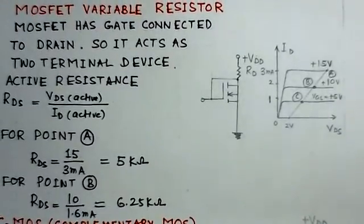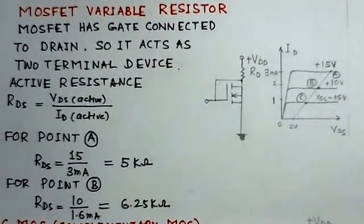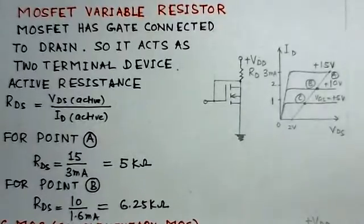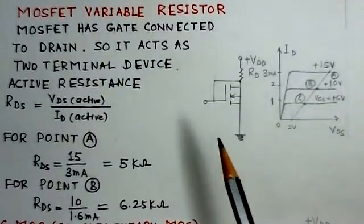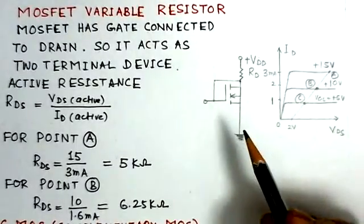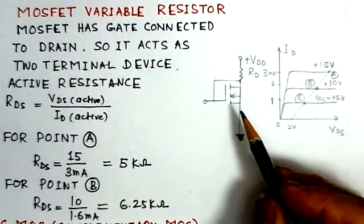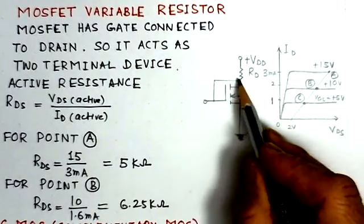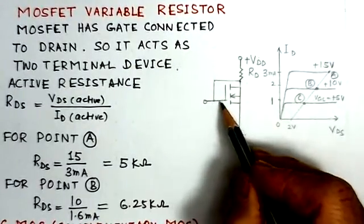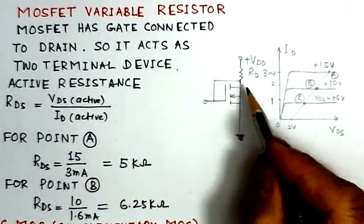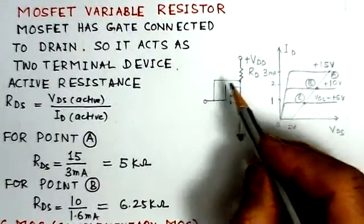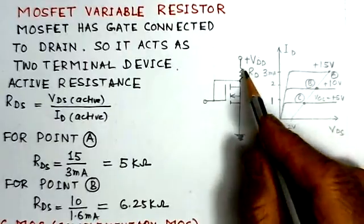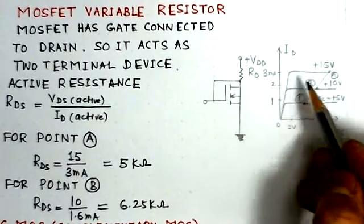Now we see the third important point is MOSFET variable resistor. That means this MOSFET acts as a variable resistor. The connection here is that gate is connected to drain, so basically it is working as a two terminal device.